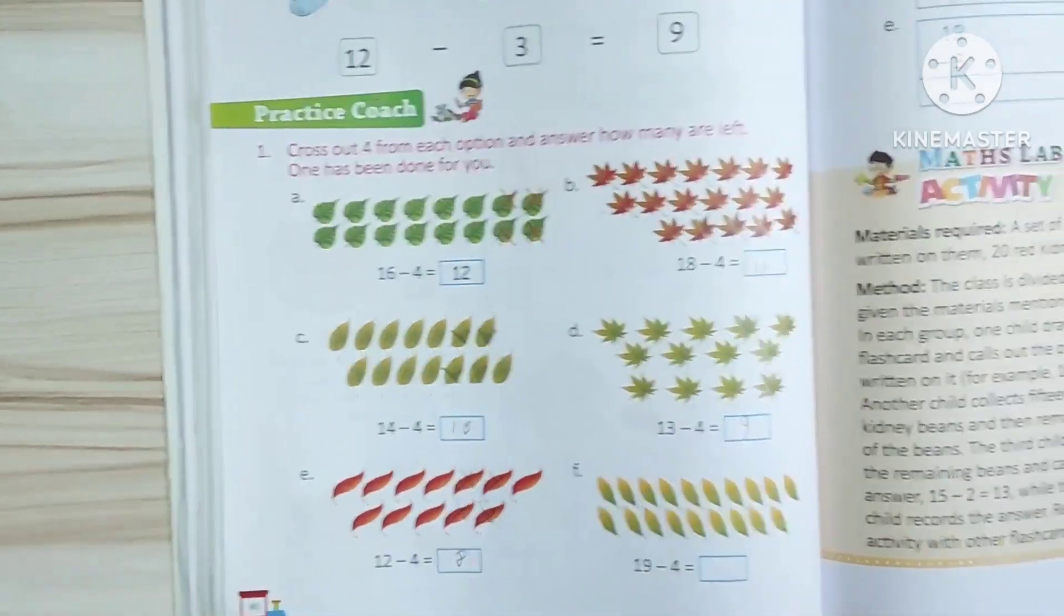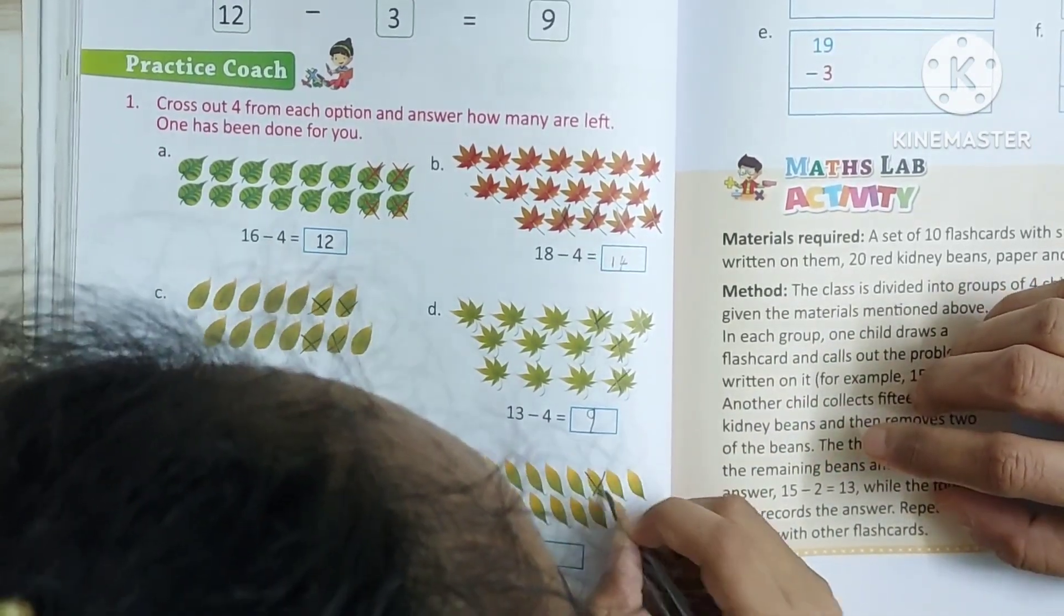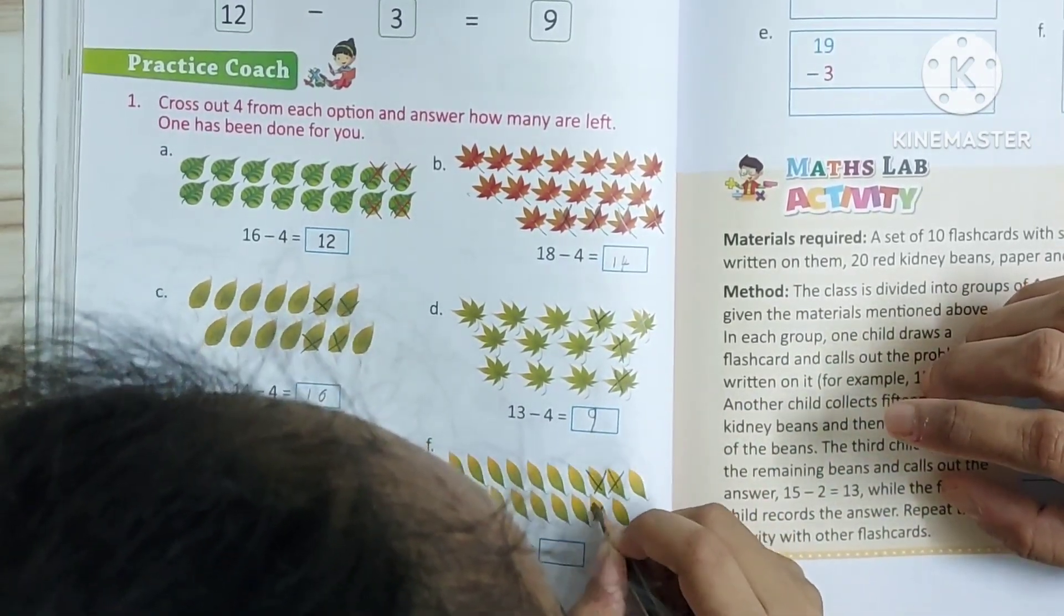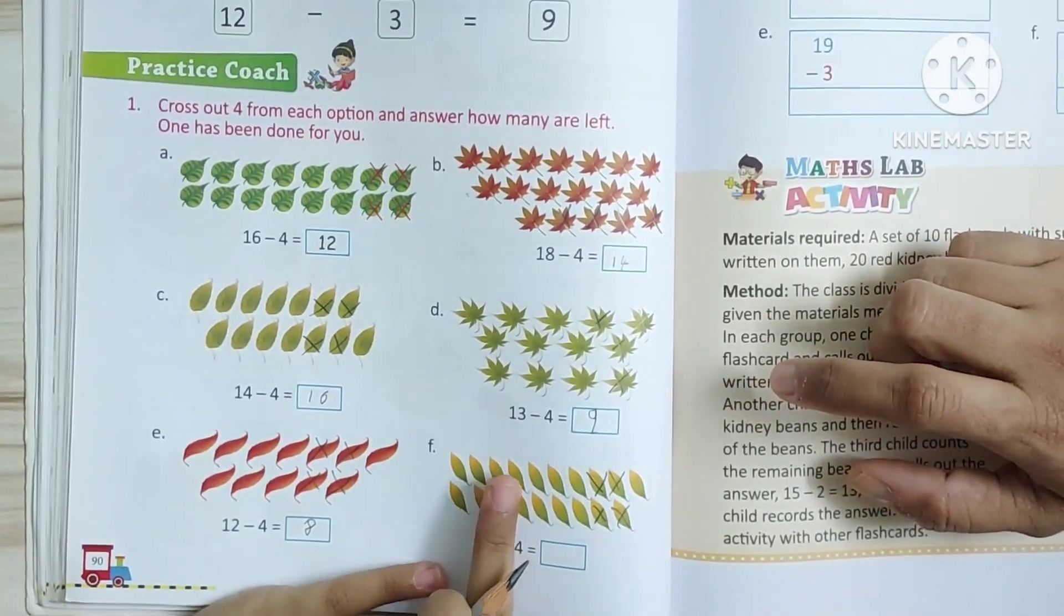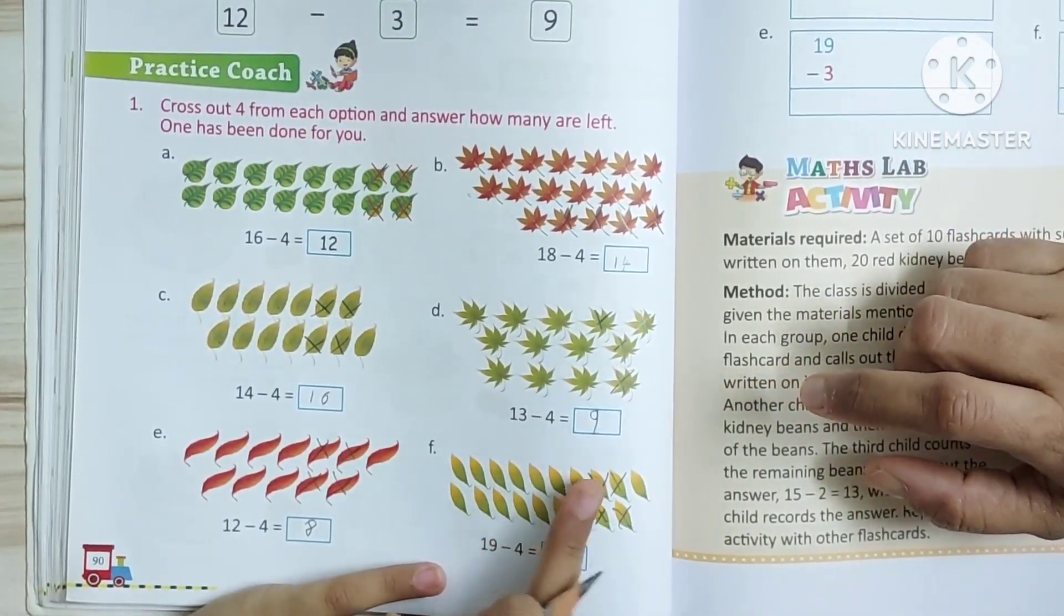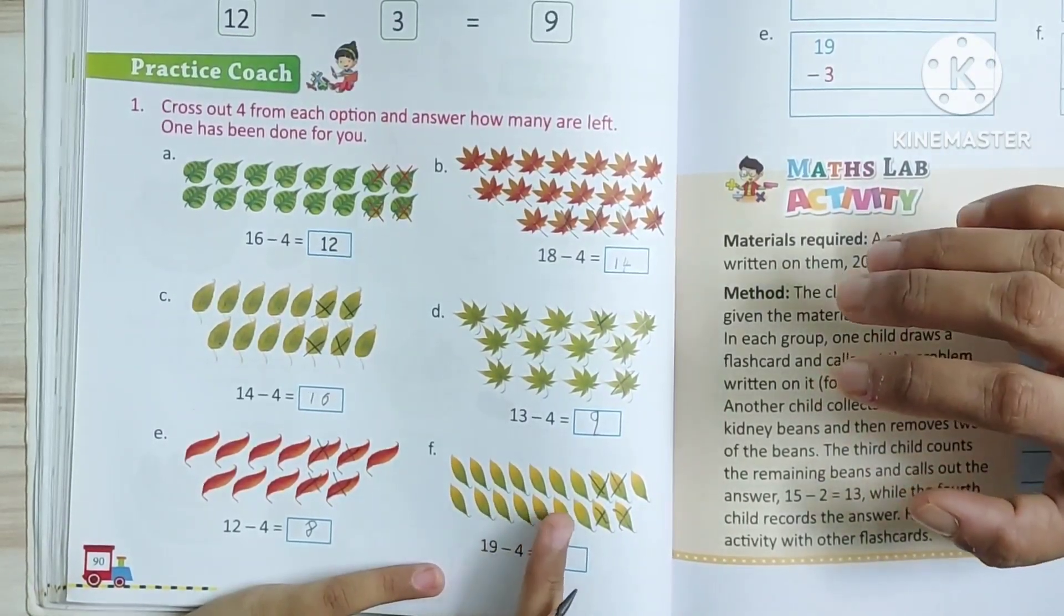Okay. Good. Next. Here cross out 4. Count mode. 1, 2, 3, 4, 5, 6, 7, 8, 9, 10, 11, 12, 13, 14, 15. Okay.